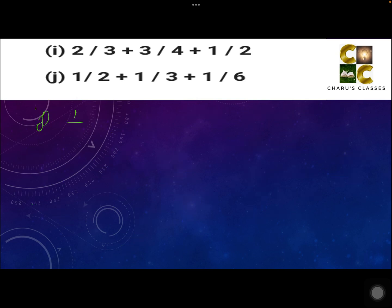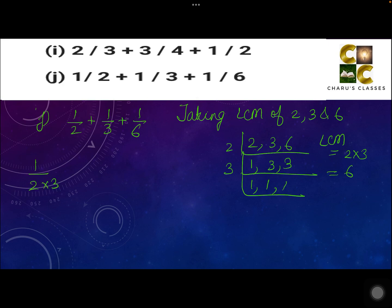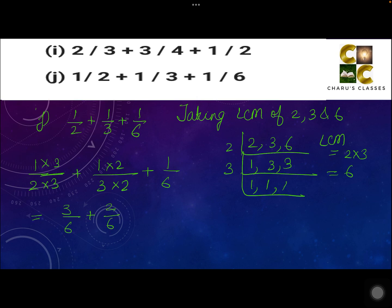Part J: 1 by 2 plus 1 by 3 plus 1 by 6. Taking the LCM of 2, 3, and 6: the LCM is 2 into 3, which is 6. For 1 by 2: multiply 2 by 3; for 1 by 3: multiply 3 by 2, so 1 is also multiplied by 2. The last term already has denominator 6, so no change needed. We get 3 by 6 plus 2 by 6 plus 1 by 6. Writing 6 once, 3 plus 2 plus 1 is 6 by 6, which simplifies to 1. The answer is 1.